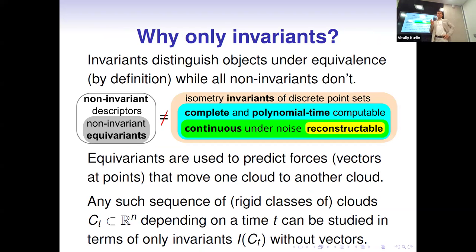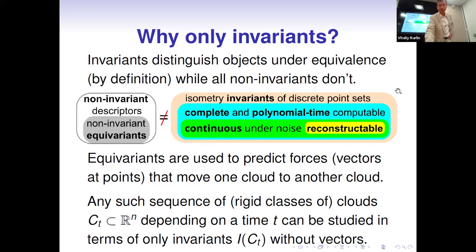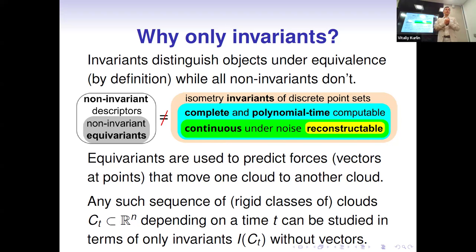Why do we think that invariants are completely sufficient for practical applications? Invariants by definition distinguish objects, while non-invariants don't. We need strong invariants — complete and also polynomial-time computable. We also need a continuous invariant: if we perturb an object slightly, we expect the invariant to change only continuously, also slightly, under small perturbation. Otherwise, a discontinuity would affect any potential optimization of properties on the space of rigid conformations.